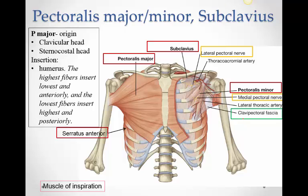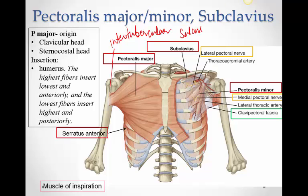There's this big muscle present on the front of the chest wall called pectoralis major. It arises from the clavicle — that part is called the clavicular head — and also from the sternum and costal cartilages, which is called the sternocostal head. This whole muscle from this massive origin moves laterally and inserts on the humerus. In the lab, you'll see the humerus has a little sulcus called the intertubercular sulcus, lying between the greater and lesser tubercles. The muscle inserts into the lateral lip of that intertubercular sulcus.